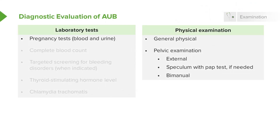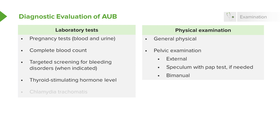In terms of laboratory tests, we want to do a pregnancy test first and foremost to rule it out. Sometimes we need to do blood and urine depending on the clinical scenario. A CBC, or complete blood count, is important to make sure the patient does not already have anemia. Based on the history, we should do targeted screening for bleeding disorders only when indicated. A TSH should also be checked to make sure the patient is not hypothyroid. And in younger patients especially, a chlamydia test needs to be done to rule out Chlamydia trachomatis.